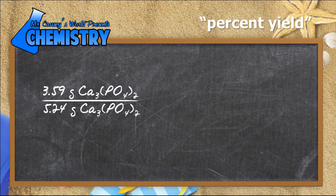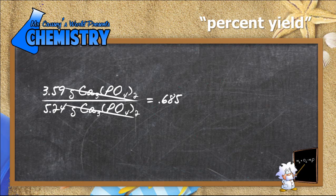And now to do the percent, take the part, divide it by the whole. We got 3.59 grams calcium phosphate, but the yield should have been 5.24 grams calcium phosphate, and so that will give us 0.685, and that's a percent yield of 68.5%, which really isn't that bad.